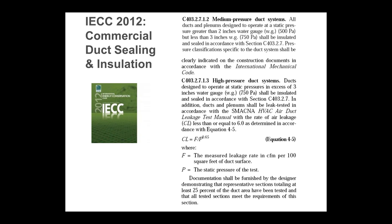Residentially, duct leakage testing is required whenever ductwork goes outside the conditioned space. Commercially the rule is entirely different — it doesn't matter if ductwork is inside or outside the conditioned space. As soon as you exceed three inches of static pressure for your operating design, that's when you have to do leakage testing and get it down to a certain leakage rate. The formula in the code is: CL = F / (P^0.65), where F is leakage in CFM per 100 square feet of duct surface and P is static pressure in inches of water column.